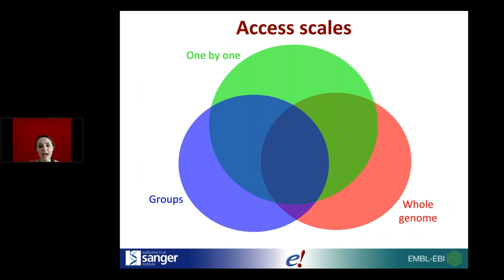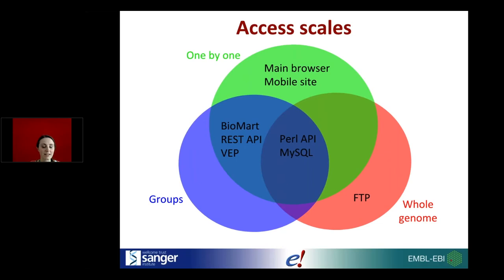You can access data at different scales — one by one, in groups, or the whole genome at once, using different methods. The main browser or mobile sites are only suitable for looking one by one. The FTP site is only suitable for the whole genome. BioMart, the API, REST API, and VEP can be used for groups or individually. The Perl API and MySQL can look at all scales.